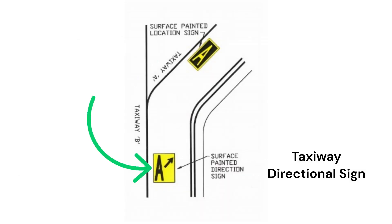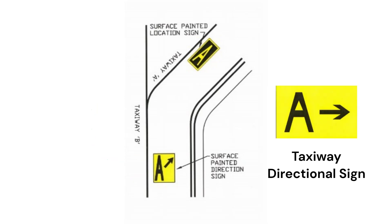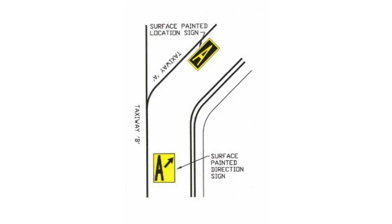A taxiway directional sign features a black letter on a yellow background with an arrow pointing to the taxiway. In this example, if a pilot was on taxiway B, they would make a slight turn to the right to proceed onto taxiway A.